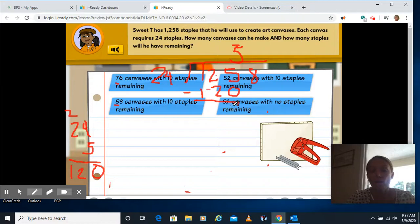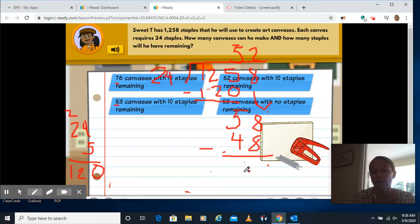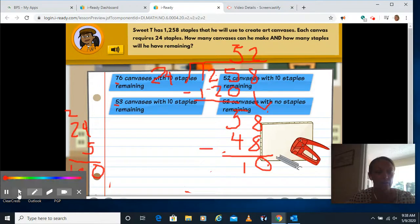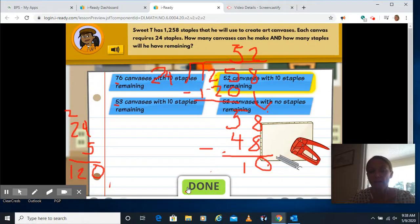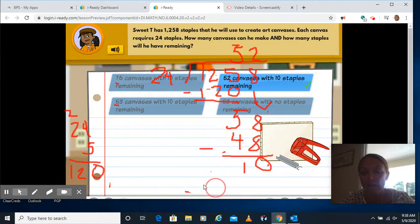125 minus 120 is 5. Bring down the 8. 24 goes into 58 twice. I know 2 times 24 is 48. And then I can subtract 58 minus 48 is 10. So I have 52 with the remainder of 10, which is actually over here. 52 canvases with 10 staples remaining. Click done. And next.